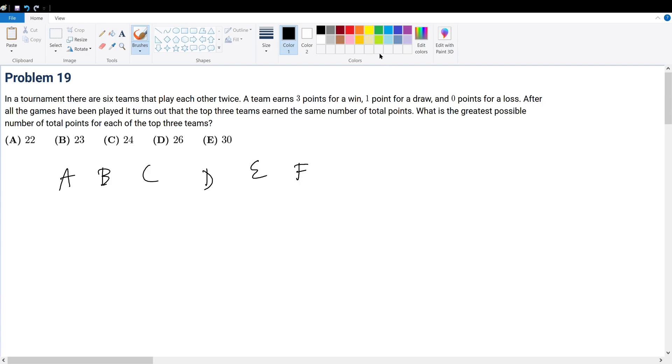A team wins 3 points for every win. So for every win, there's 3. There's 1 point for a draw. So for a draw, there's 1 point. And for a loss, they get 0 points.